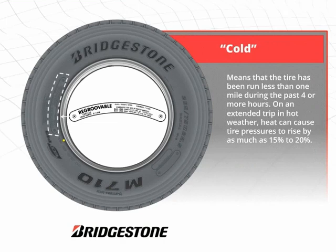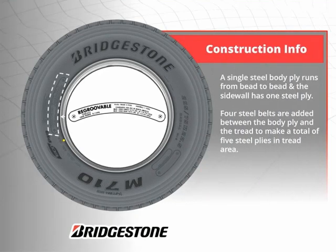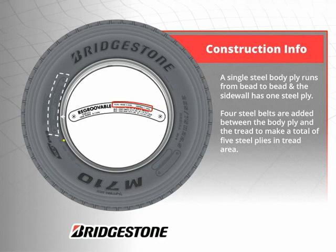Cold means that the tire has been run less than one mile during the past four or more hours. On an extended trip in hot weather, heat can cause tire pressures to rise by as much as 15 to 20 percent. In this example of construction information, a single steel body ply runs from bead to bead. The sidewall therefore has one steel ply. Four steel belts are added between the body ply and the tread to make a total of five steel plies in the tread area.